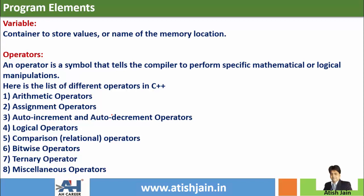An operator is a symbol that tells the compiler to perform some mathematical and logical operations. Here is the list of different operators in C++: arithmetic operators, assignment operators, increment and decrement operators, logical operators, comparison operators, bitwise operators, ternary operators, and some miscellaneous operators — especially C++ related operators.